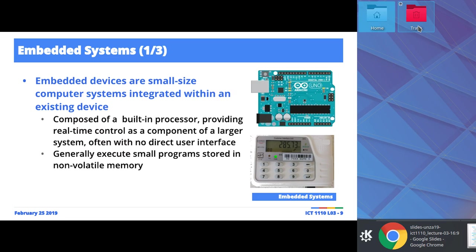Usually, the core computer system component — which is a processor — is built into the device itself, so you won't be able to see it unless you take it apart. Something unique to embedded systems is there is usually no direct user interface. You don't necessarily interact directly with the device. The thing being passed around — the quadcopter — is a good example. To interact with that, I must use either the Android app or the joystick.